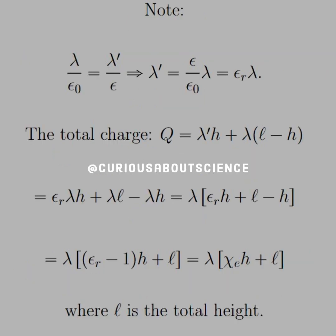Let's note that lambda over epsilon naught is equal to lambda prime over epsilon. Therefore, solving for lambda prime, we get epsilon over epsilon naught lambda. We know that epsilon is epsilon R times epsilon naught, so the epsilon naughts cancel, and we get epsilon R, or the dielectric constant, times lambda.